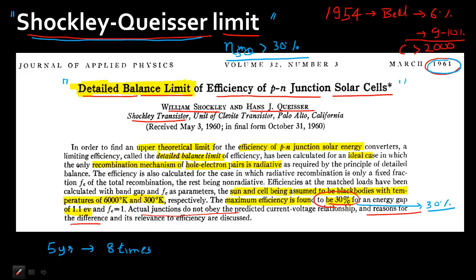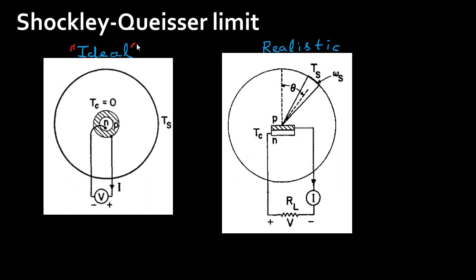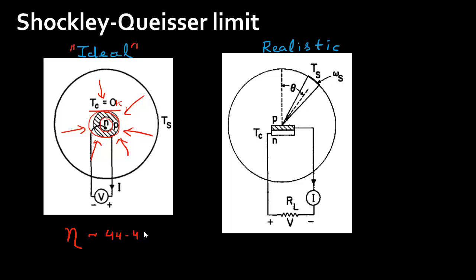In the last video, we were seeing this idealized case where the temperature of the cell was zero Kelvin. I also assumed the cell to be a circular disc, and radiation was incident on this disc from all directions. This gives an efficiency of approximately 44 to 45%, assuming this cell design and a cell temperature of zero Kelvin.